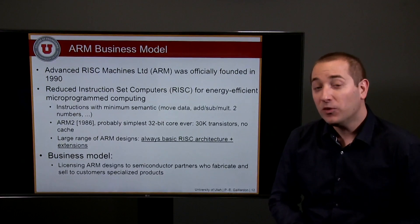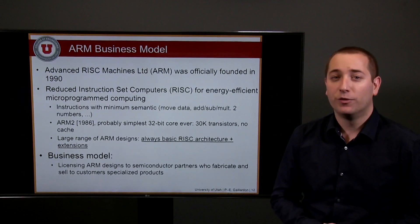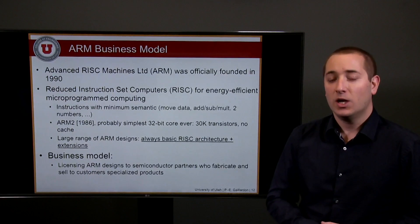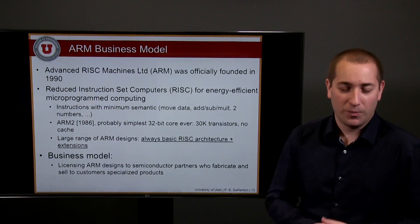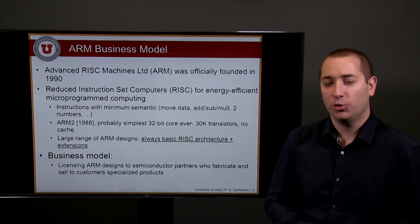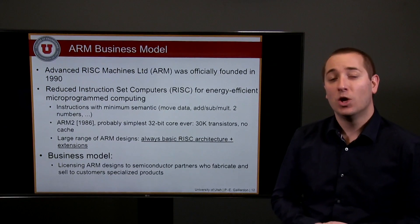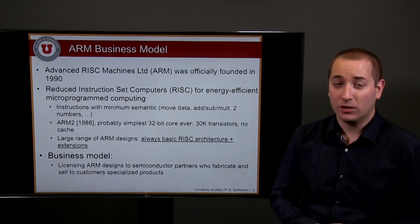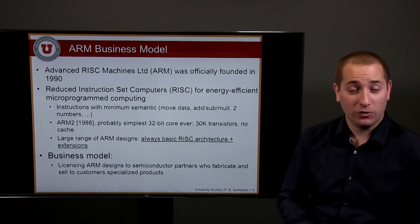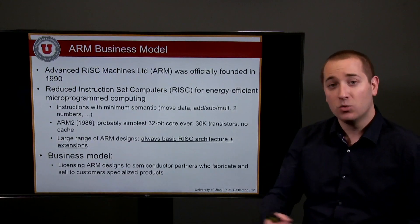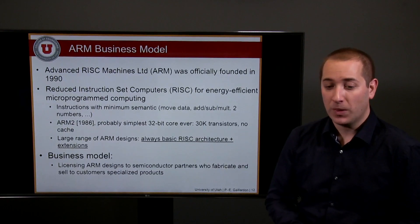ARM is very peculiar in its business model — it is one of the first fabless business models. ARM designs computer cores and sells these IPs to other companies that integrate them on silicon. Those companies could be either fabless themselves and use different foundry services, or companies that have their own foundry.